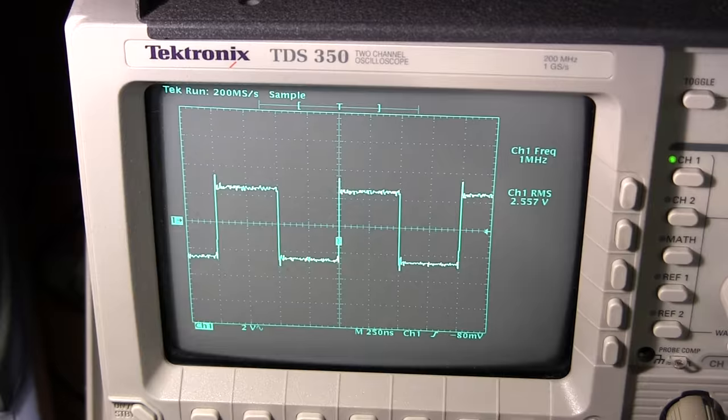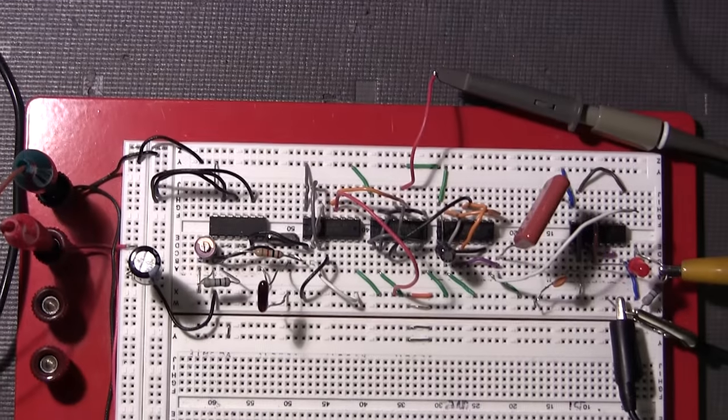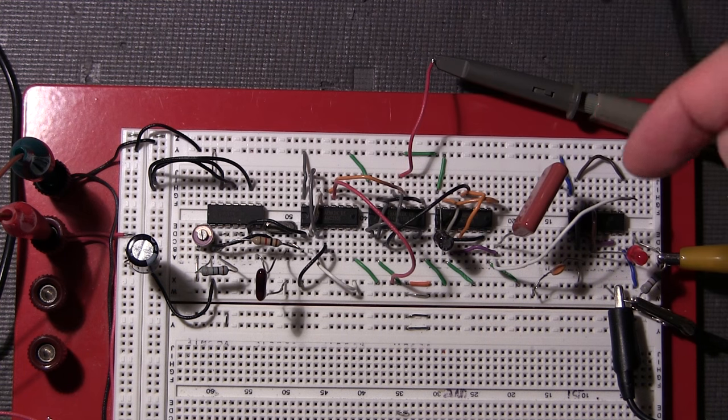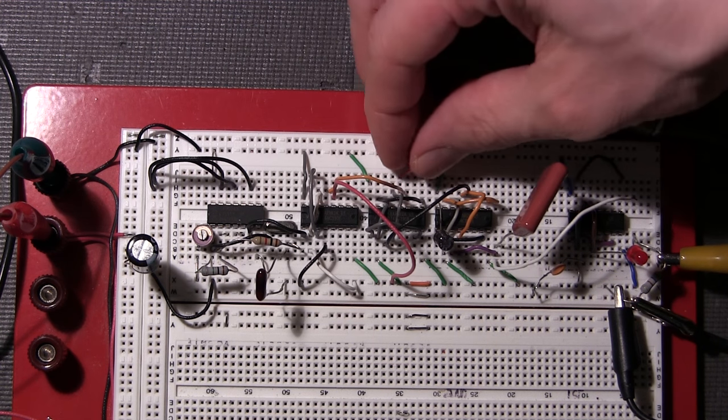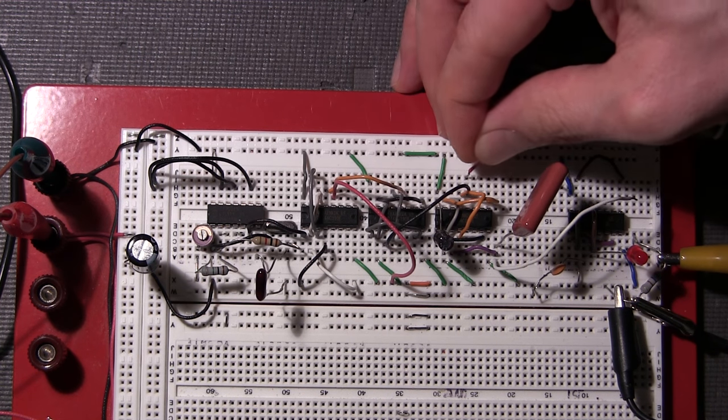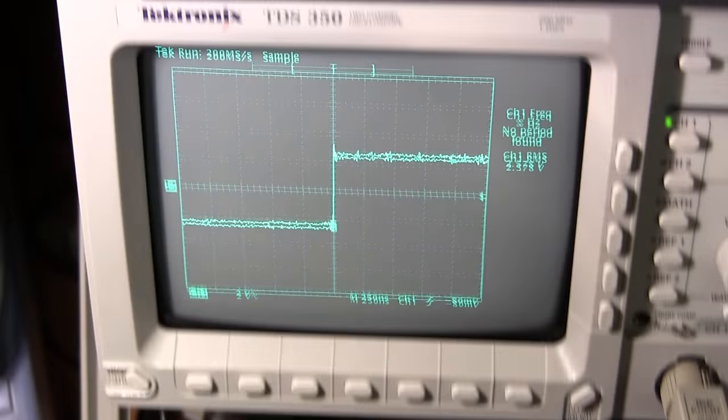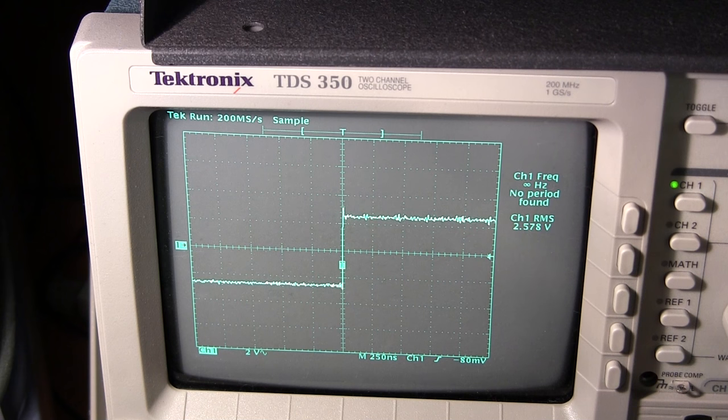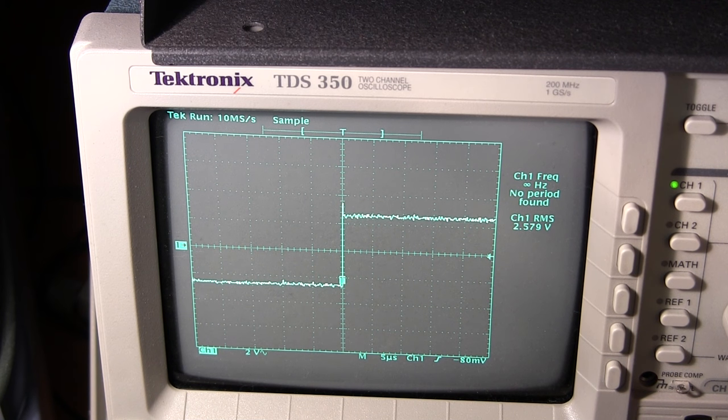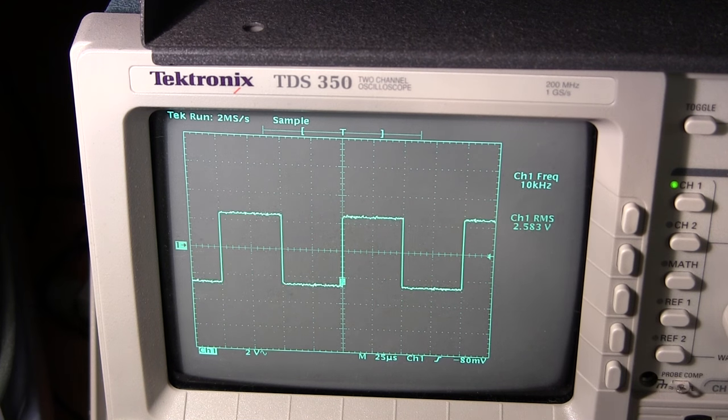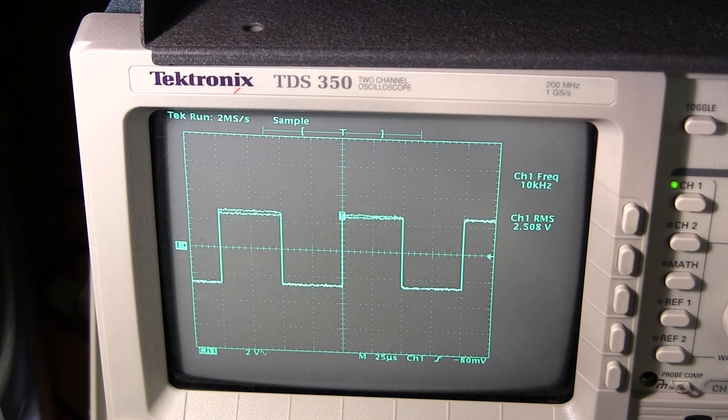I'm going to move it over to the next stage. We should have 10 kilohertz if we divide that by 100 again. I'll put this over here to the input of the next IC. Take a look at the scope here and I'll adjust my oscilloscope. There we go, 10 kilohertz right there.